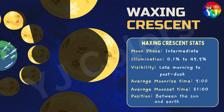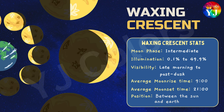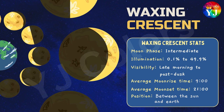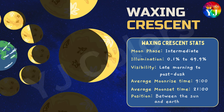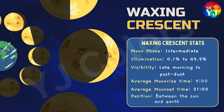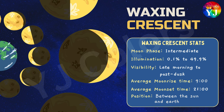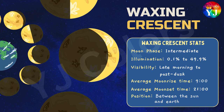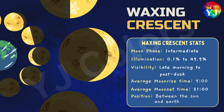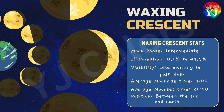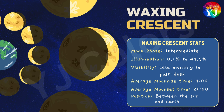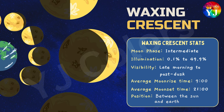Statistics of Waxing Crescent: Moon Phase — Intermediate; Illumination — 0.1% to 49.9%; Visibility — late morning to post-dusk; Average Moonrise and Moonset Time — 9 a.m. to 9 p.m.; Position — between the Sun and Earth.